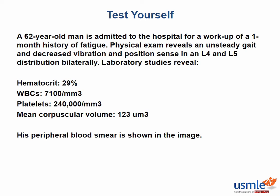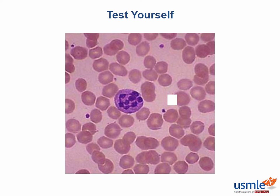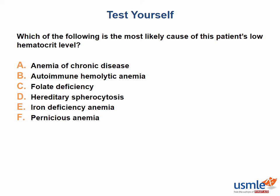Now let's try a question. We have a 62-year-old man admitted to the hospital for workup of a one-month history of fatigue. Physical exam reveals an unsteady gait and decreased vibration and position sense in the L4-L5 distribution bilaterally. Laboratory studies reveal a hematocrit of 29%, white blood cells at 7,100, platelets at 240,000, and an MCV of 123. A peripheral smear is obtained and shown here. Which of the following is the most likely cause of this patient's low hematocrit?